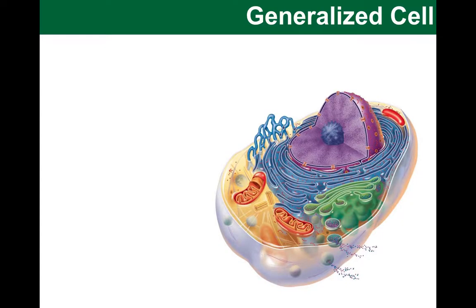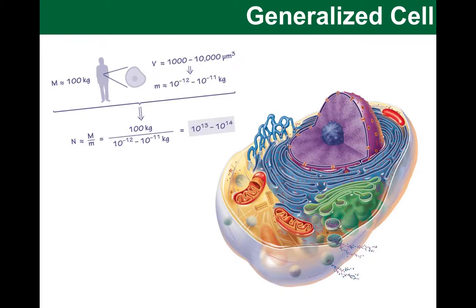In our last chapter, we reviewed the most important parts of a generalized model of a cell. But cells do not exist alone in the body. In fact, there are a few organisms that are made of only a single cell — these are known as unicellular organisms. But for the most part, most living organisms are multicellular, meaning they are made of many cells. In the case of a human, there are approximately 30 to 40 trillion cells, depending on the size and age of an individual. This number alone tells us that all of these cells must work together.